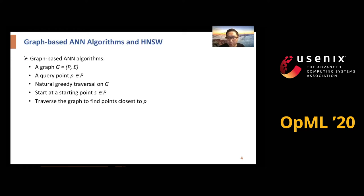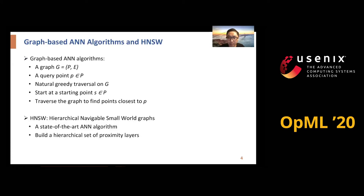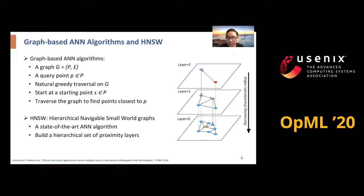Graph-based ANN algorithms typically build a graph G based on the geometric properties of points in the dataset P, with connecting edges between the points. During ANN search, given a query point, the algorithms employ a greedy traversal on G, starting at the entry point S, and traverse the graph to move progressively closer to the query. HNSW is a state-of-the-art ANN algorithm based on graphs. It builds a hierarchical set of proximity graphs, like layers, for nested subsets of the stored points. The algorithm greedily traverses from the upper layer until a local minimum is reached at the bottom layer.